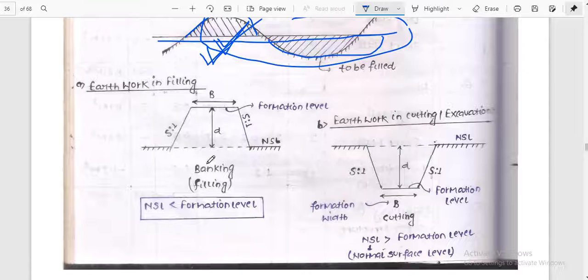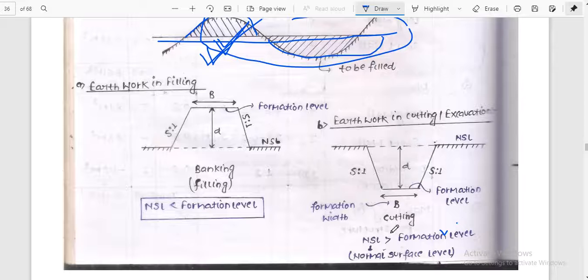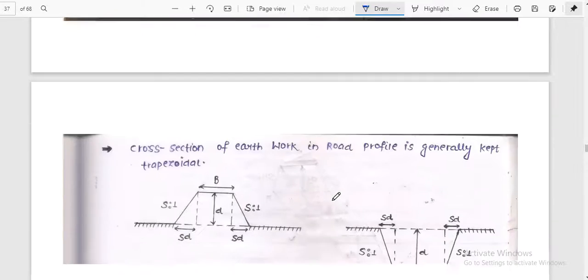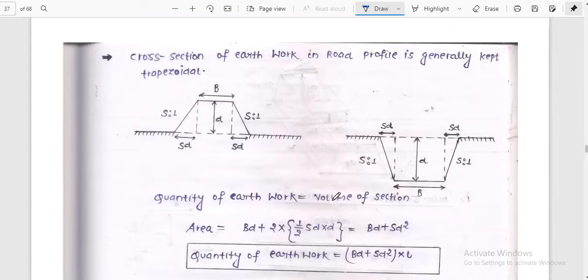This is the formation level, this is the banking or filling, and this is NSL. Filling is carried out when NSL is less than formation level. When the normal surface level is down, we have to do filling. Cutting and excavation is when normal surface level is above as compared to formation level, so we have to do excavation.